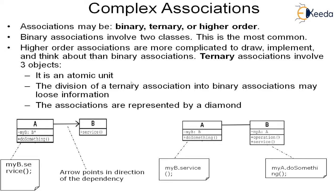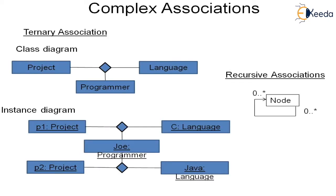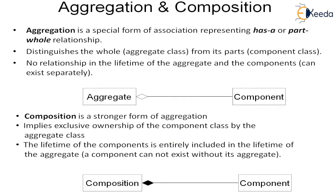There is also a recursive association when the same class is related to itself. Recursive relations can occur when there is an employee and a manager — a manager is also an employee. That is a very good example of a recursive relation.